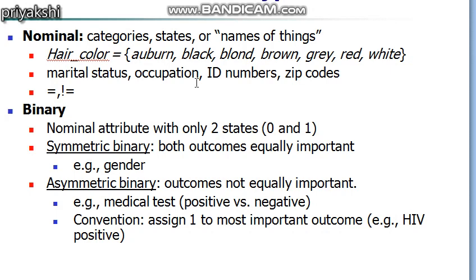Other examples of nominal attributes include gender, country, zip codes, and ID numbers — for these we can only say values are equal or not equal. A binary attribute is a special case of nominal attribute that has only two possible values or states: zero and one. Examples include gender, marital status, experimental results (success or failure), and the presence of a word in a document.